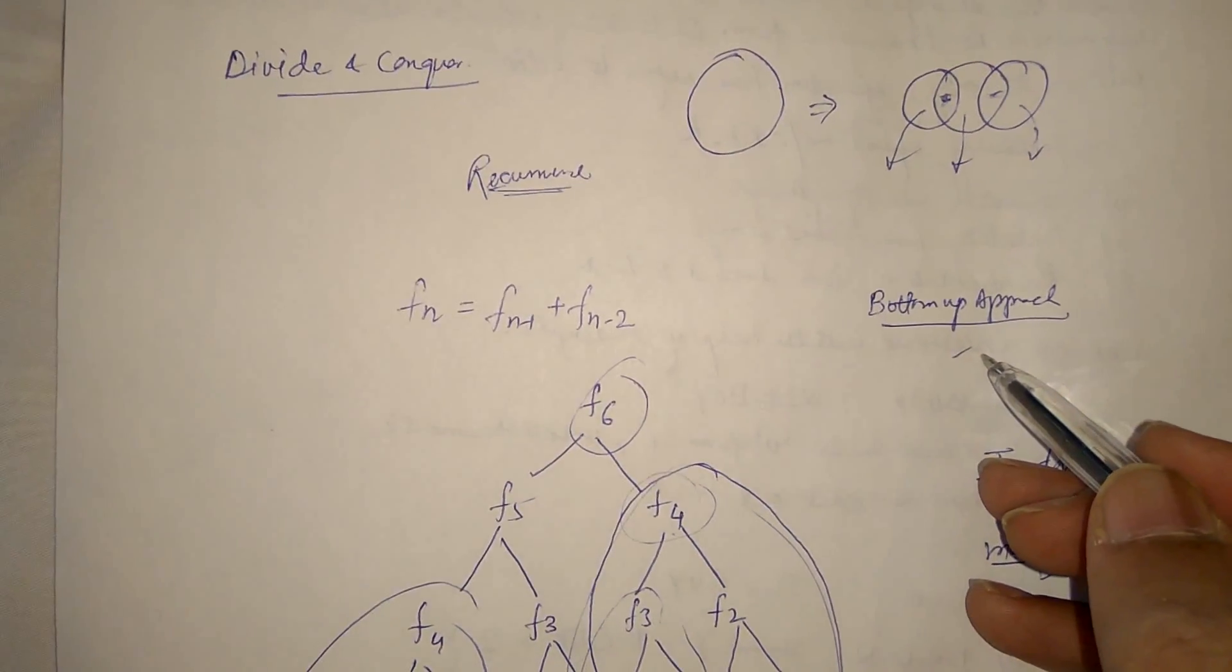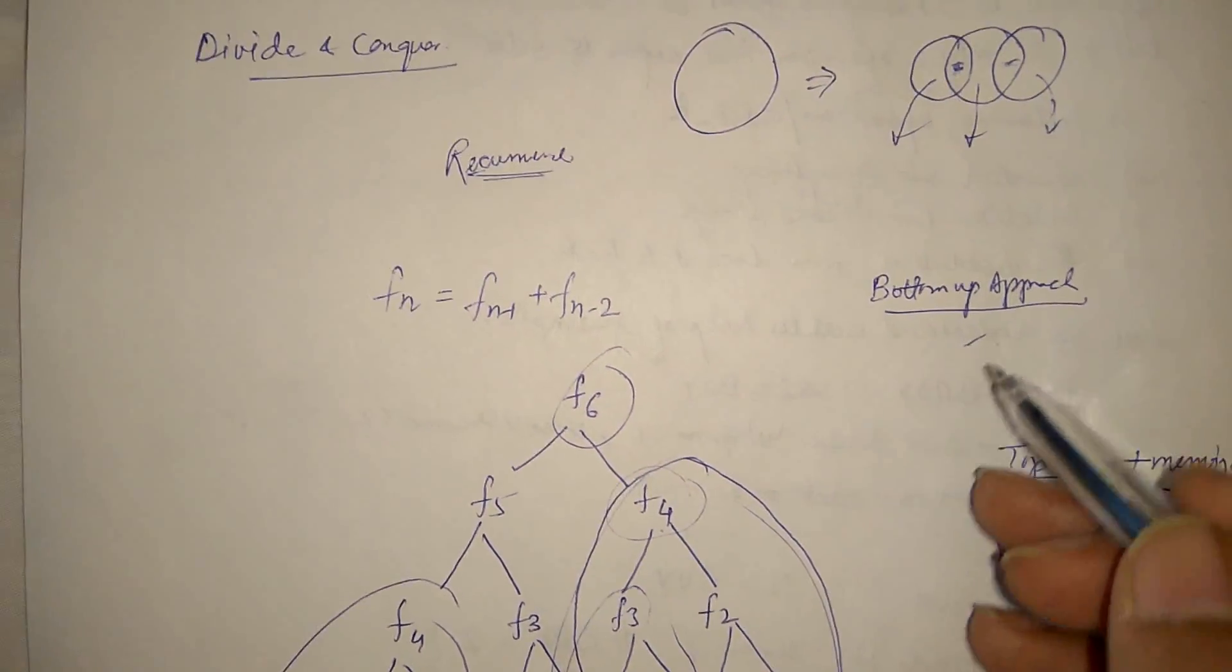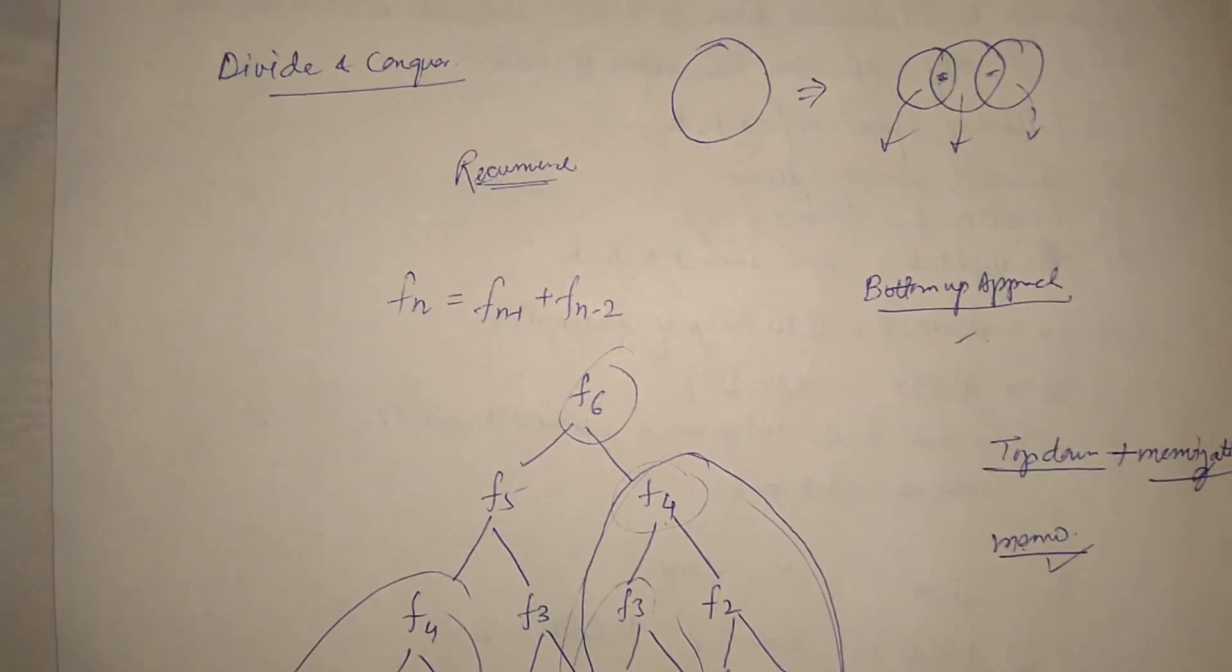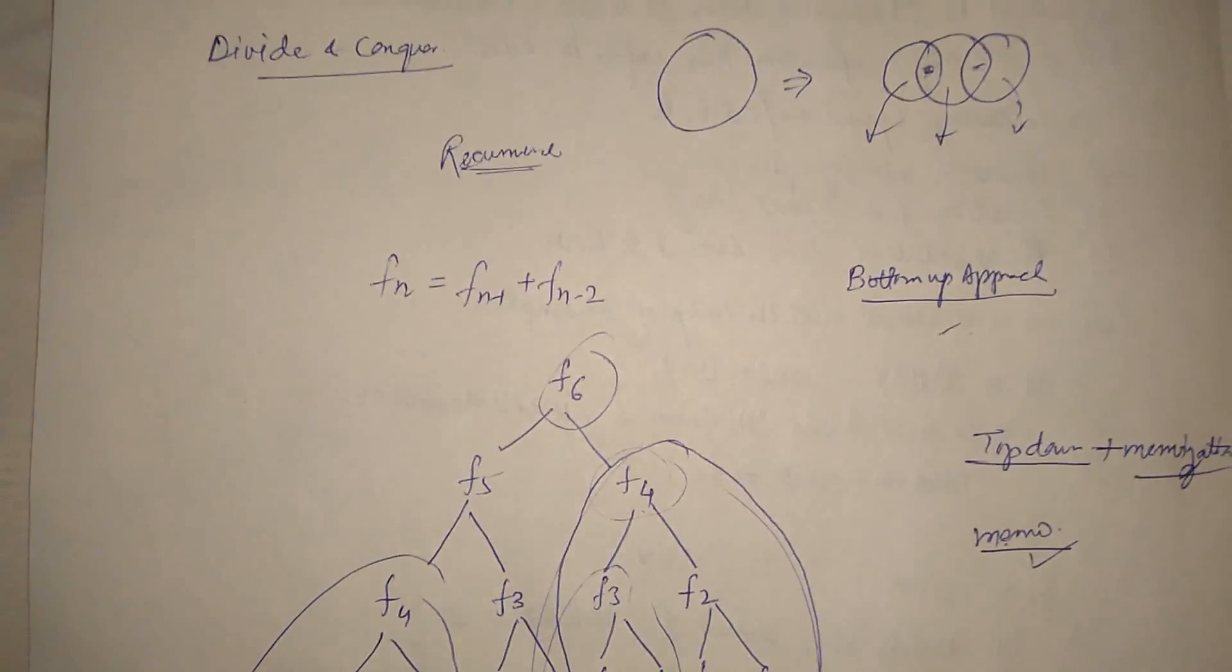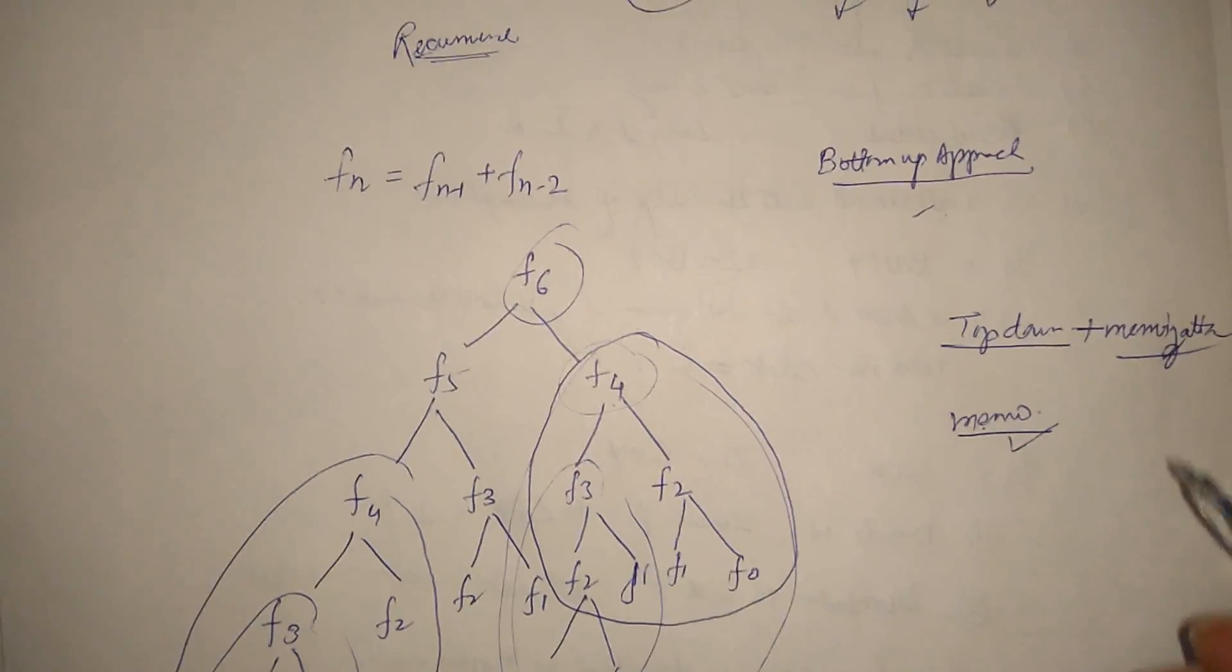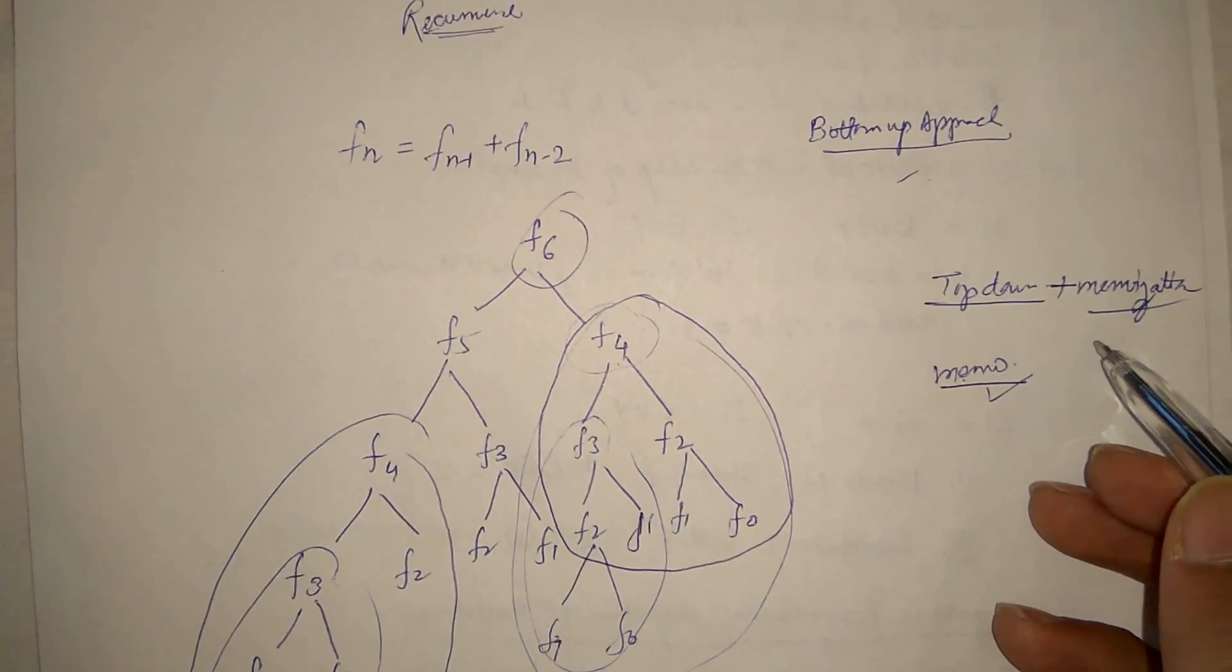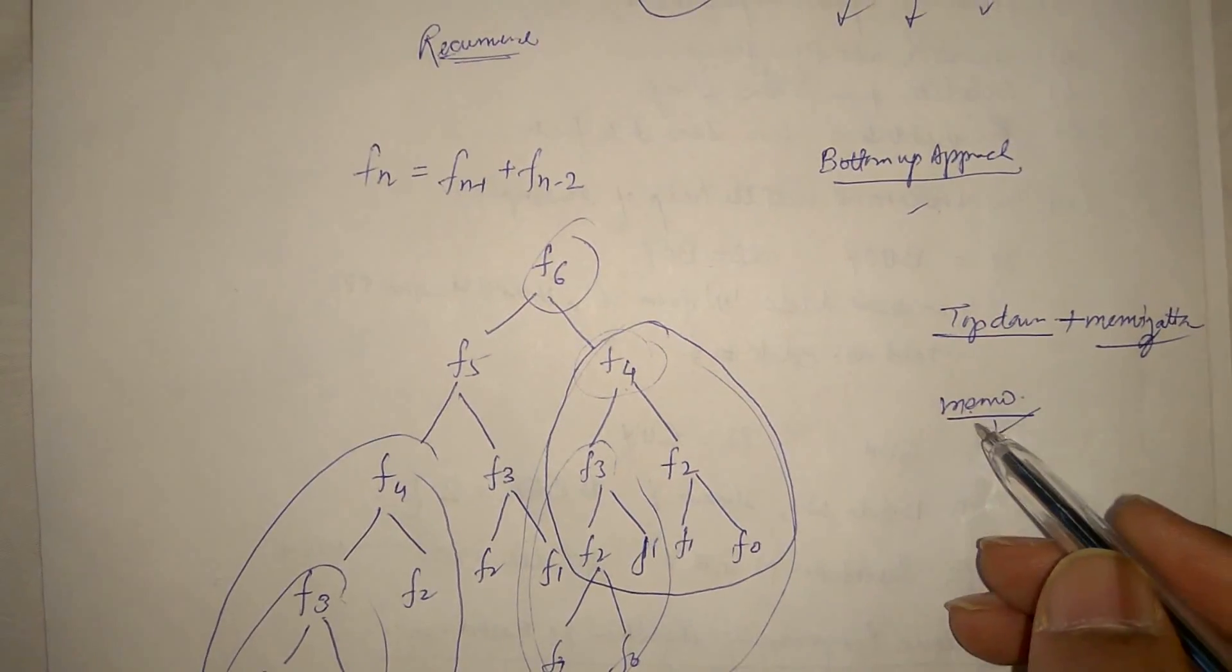We will start storing our result, not all the result, which is going to be used, the immediate result. We are going to store in memoization, but we are not solving the entire table in top down memoization. But in bottom up approach, we solve all set of possibility for that problem.